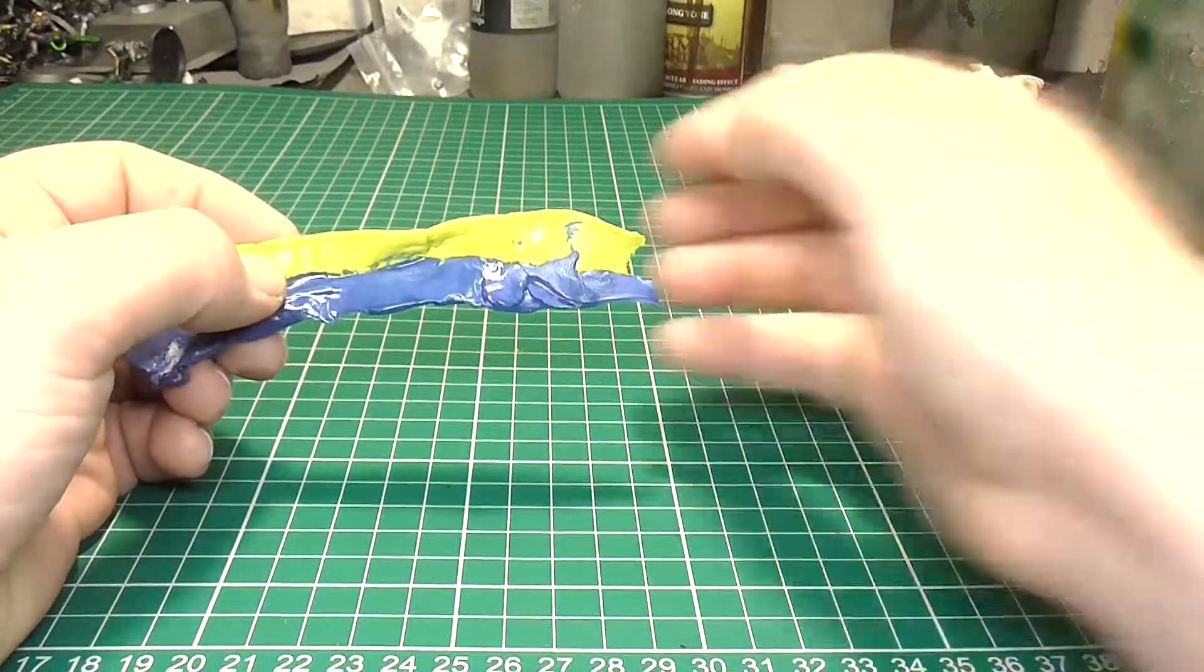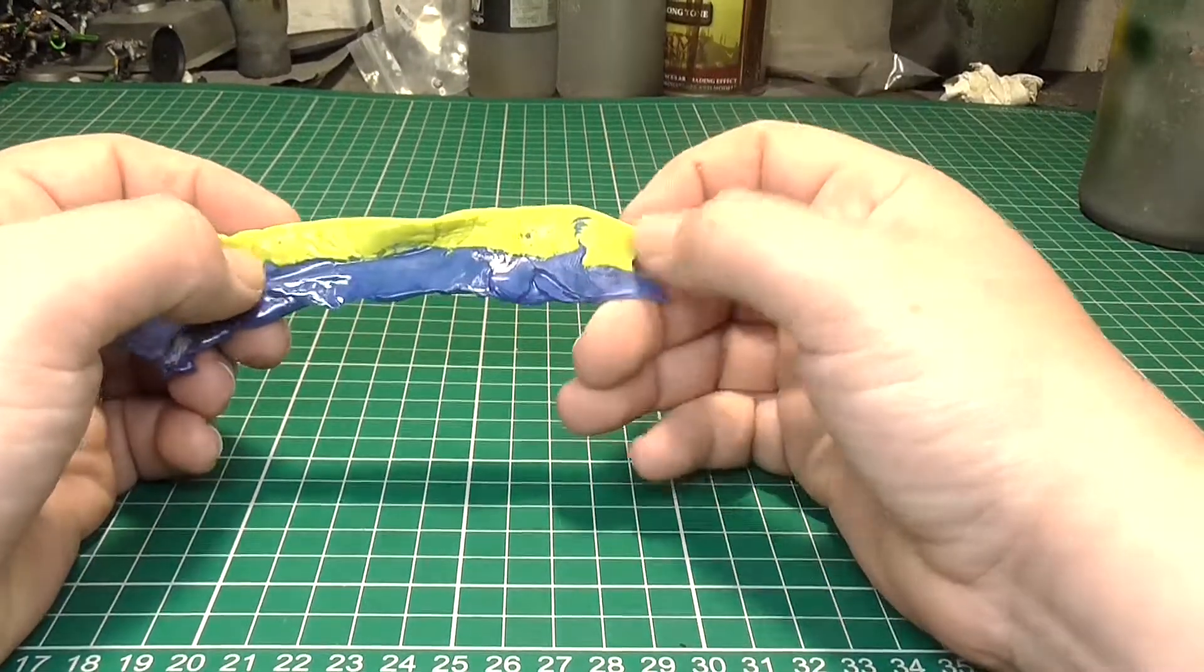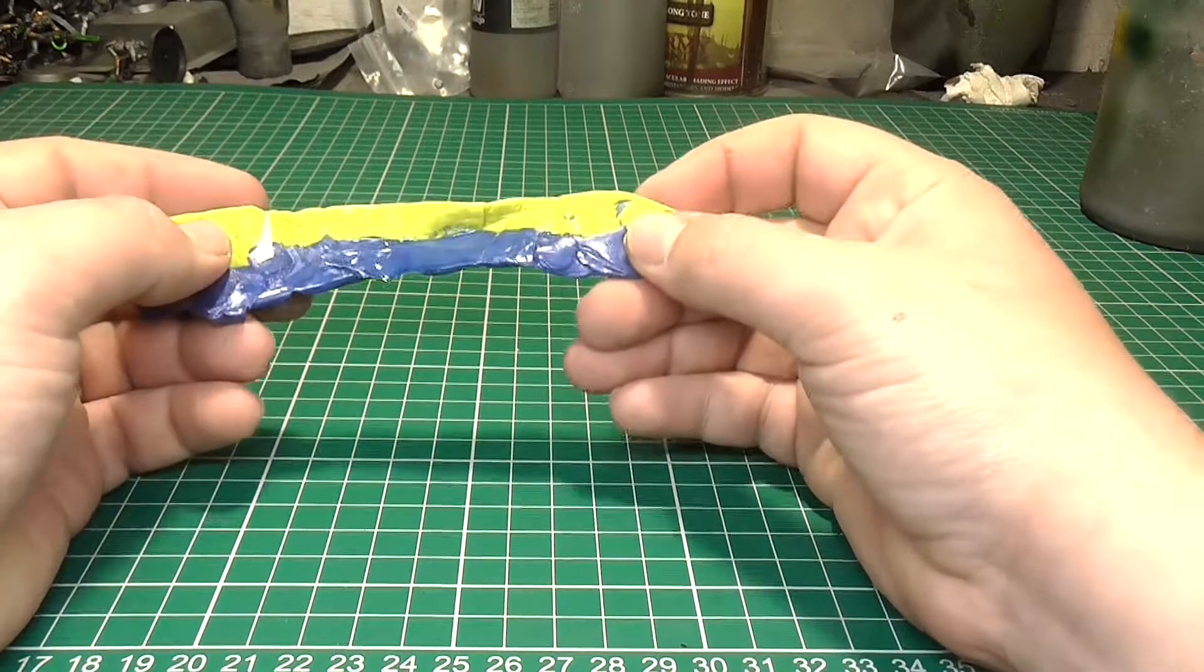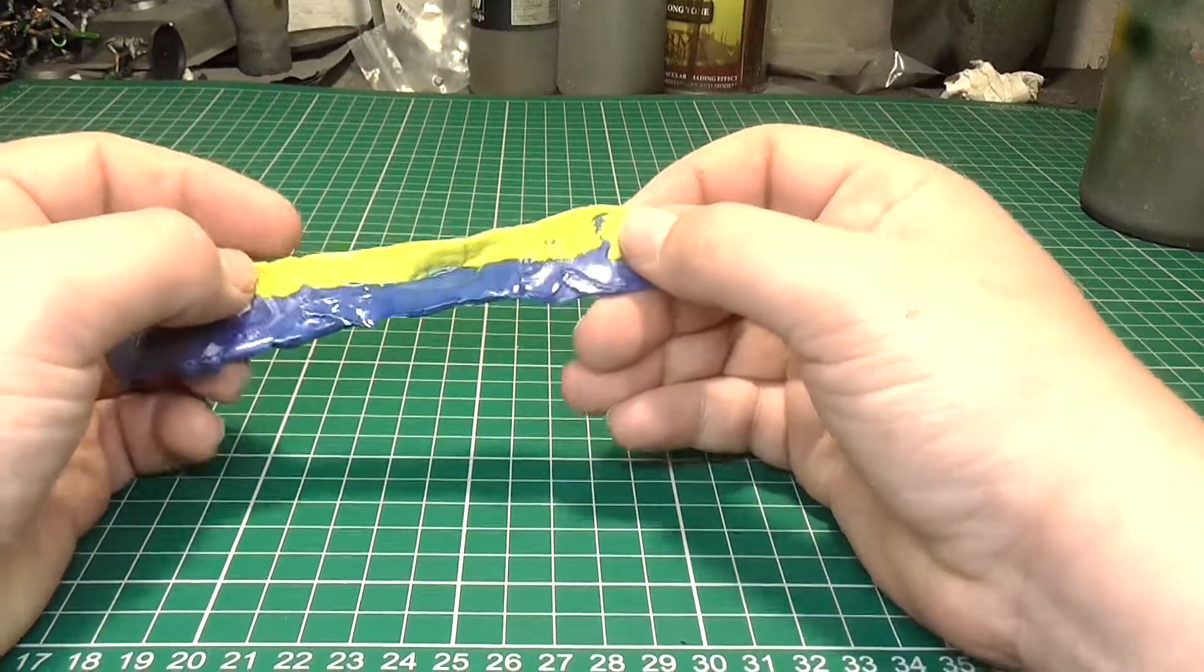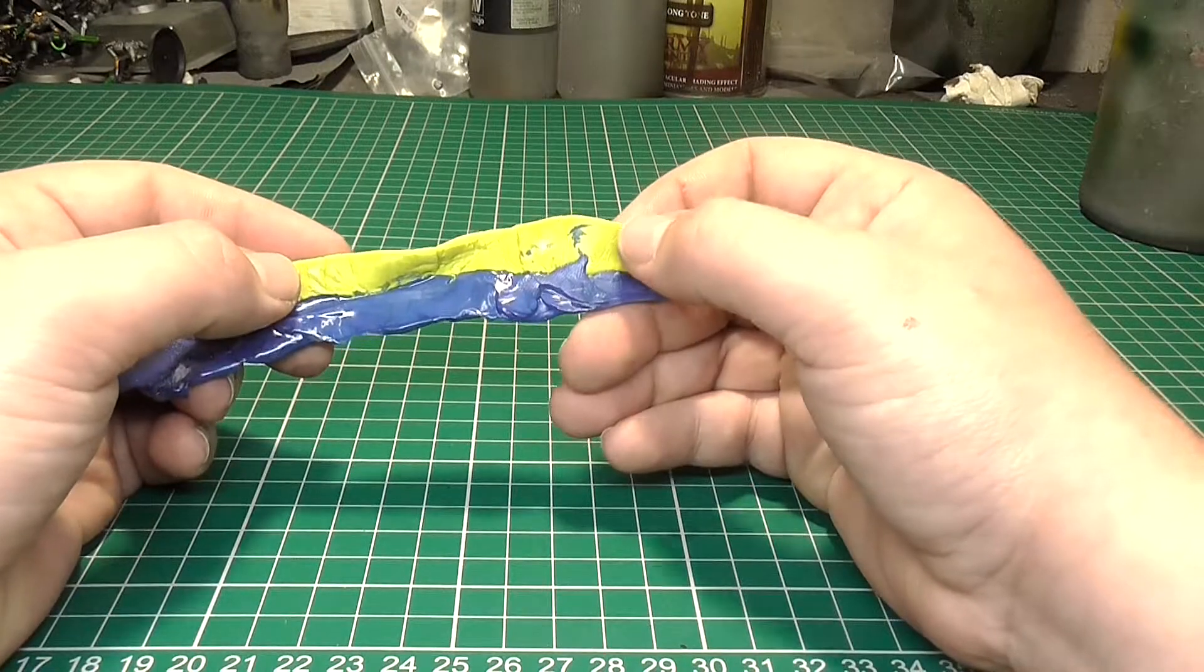Basically, one of these is a hardener, and the other part is something else. Not entirely sure what it is, but when you mix it together, it starts the curing process, and it goes rock hard, like plastic, almost.